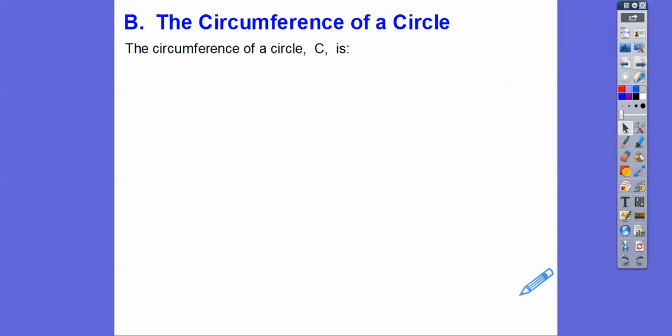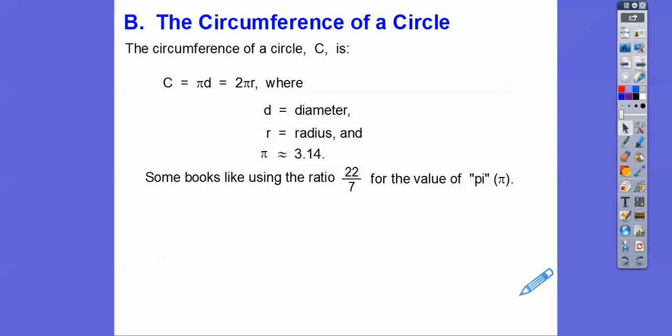So circumference, you guys, circumference of a circle, and we call it C, is either pi times d or two times pi times r, where d is the diameter and r is the radius. So sometimes we will use pi as 3.14. Some books like to use the ratio 22 sevenths for the value of pi. Those are both approximate answers for pi. And either one is okay for us for now, you guys.